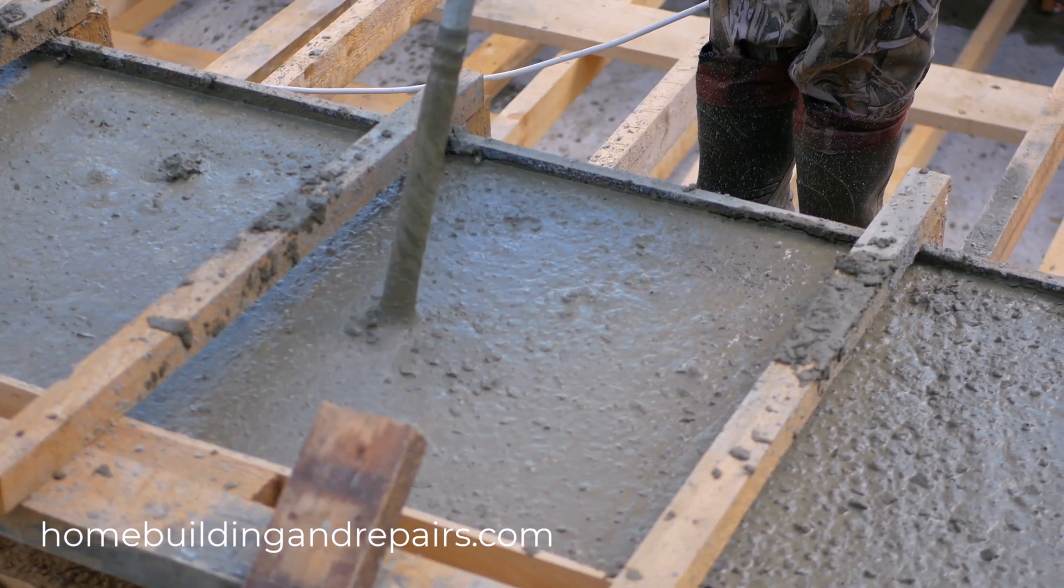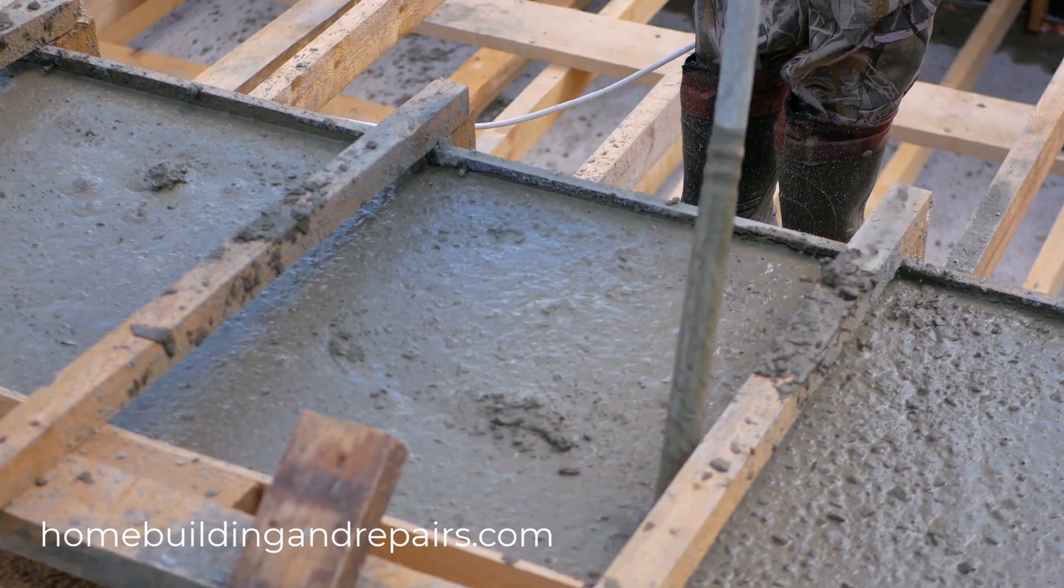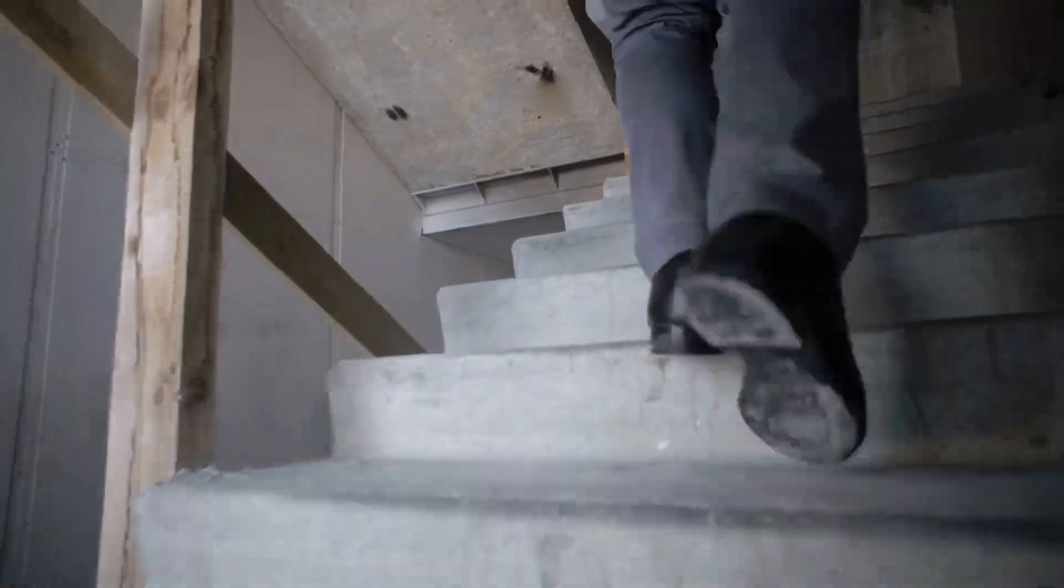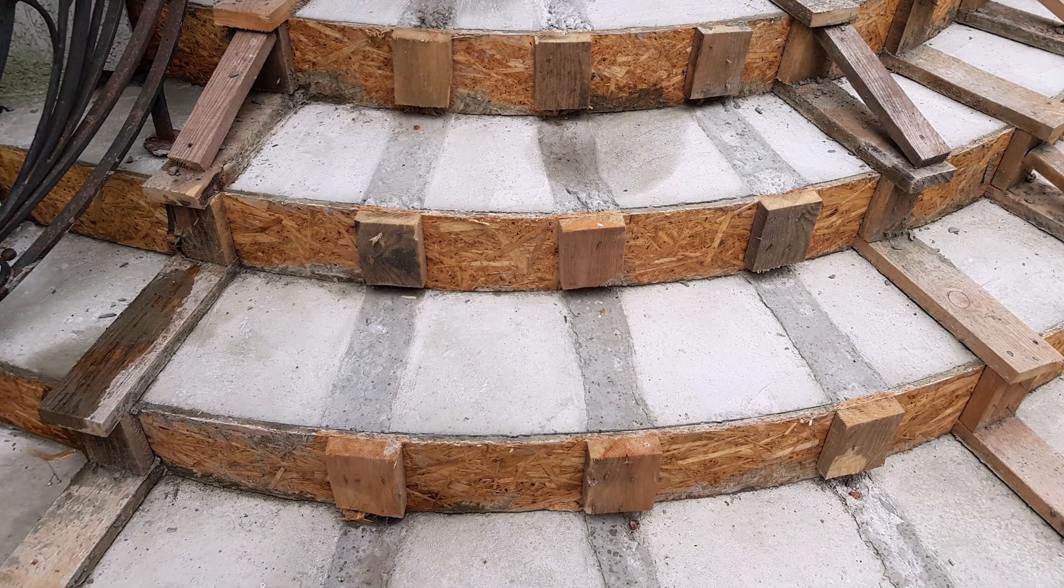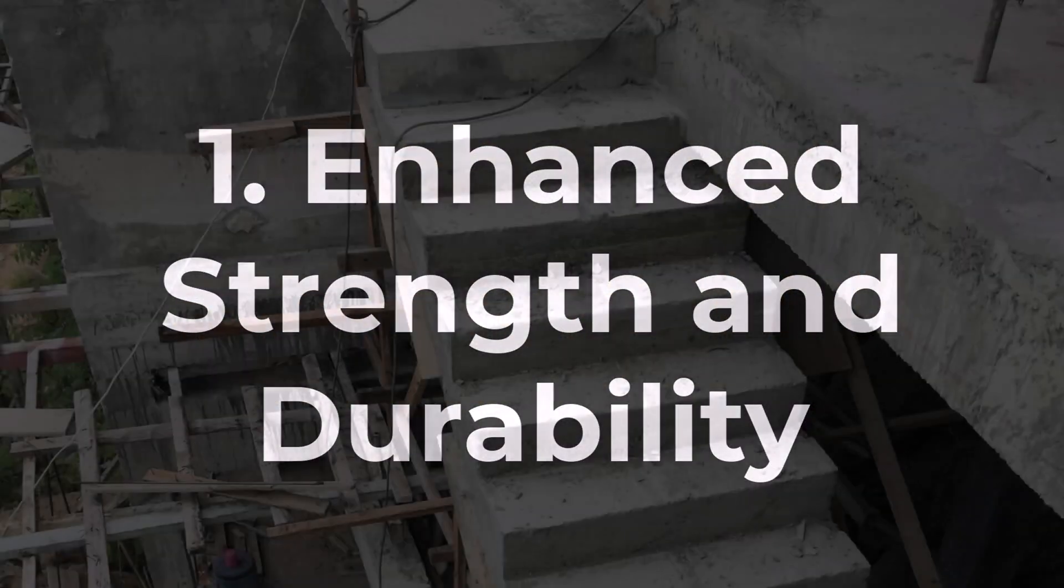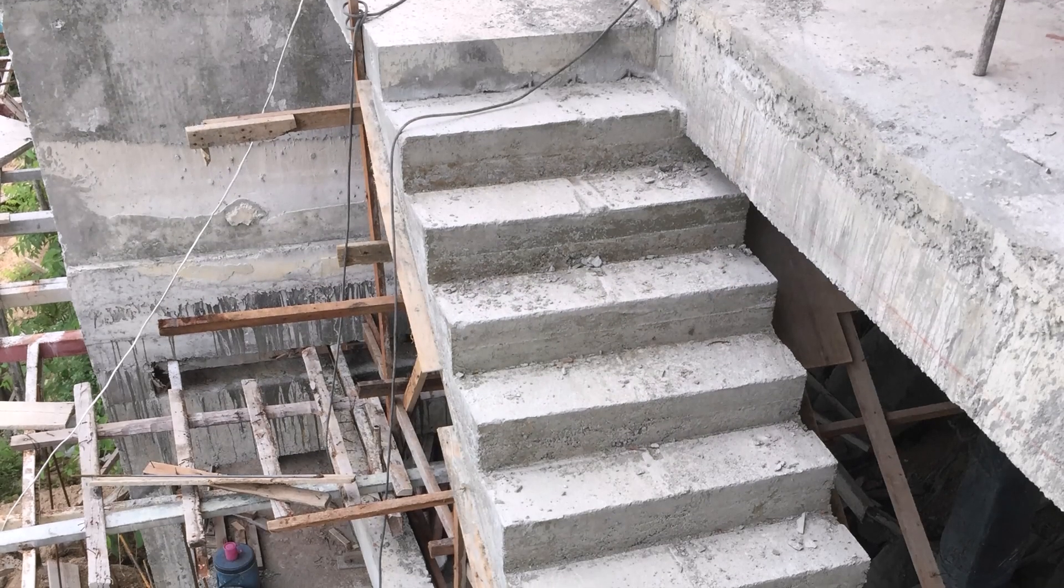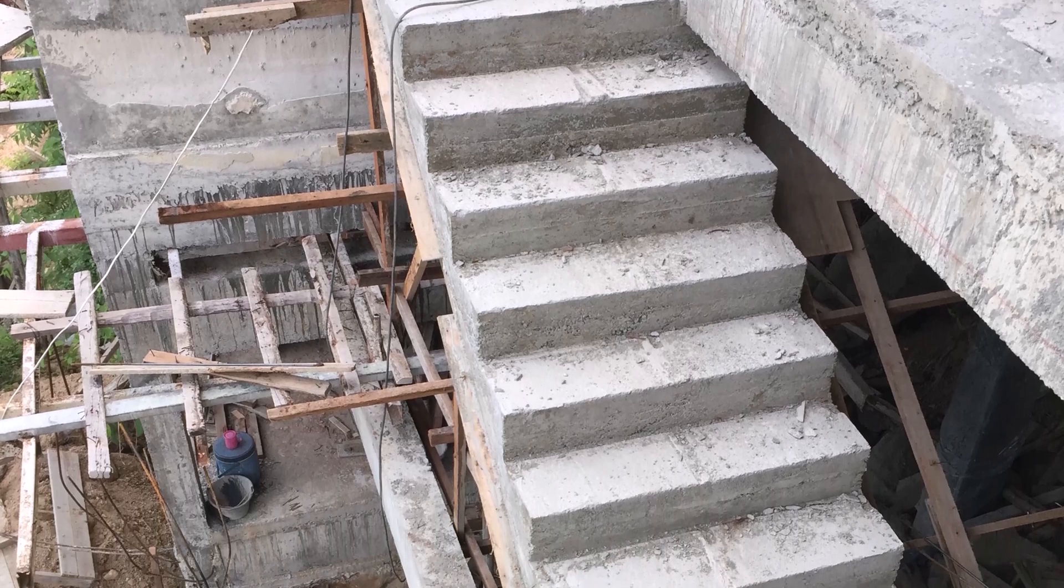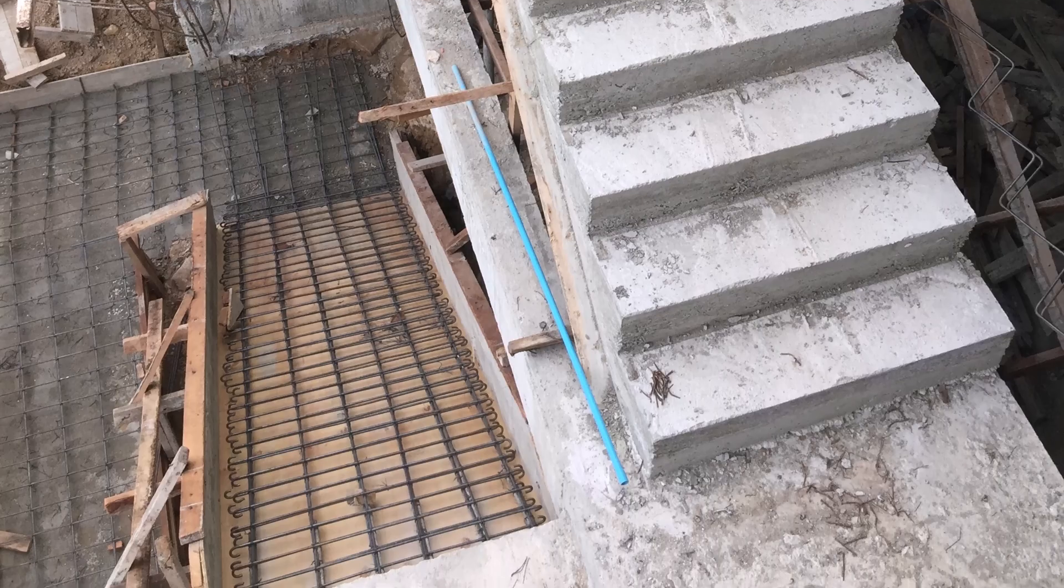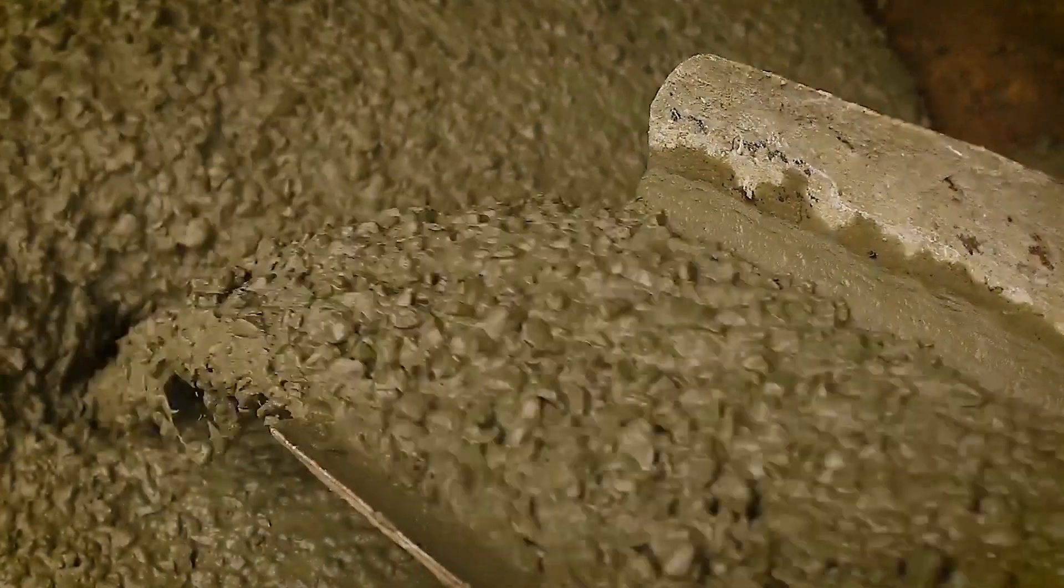When it comes to constructing concrete stairs, you have two primary options. Pour them in multiple sections or opt for a single, monolithic pour. While both methods result in functional stairs, a monolithic pour offers a range of advantages that make it the superior choice for many projects. Let's explore why. 1. Enhanced strength and durability. 2. Seamless construction, a monolithic pour eliminates joints between steps, which are inherent weak points in multi-pore stairs. These joints are susceptible to cracking, chipping, and water damage over time. A single pour creates a continuous, unified structure, significantly enhancing overall strength and durability.